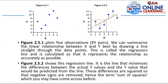Figure 2.5.1 has five observations: 1, 2, 3, 4, 5. We can summarize the linear relation between x and y best by drawing a line straight from the data points. This is called the regression line, and it is calculated so that it represents the relationship as accurately as possible.